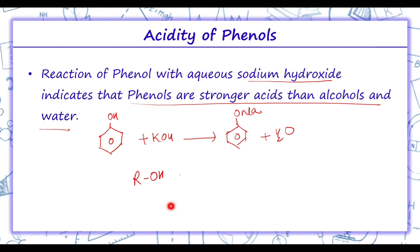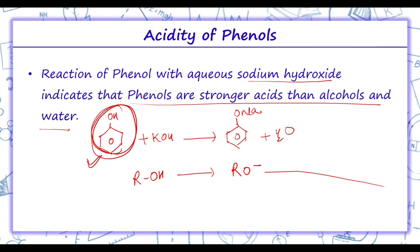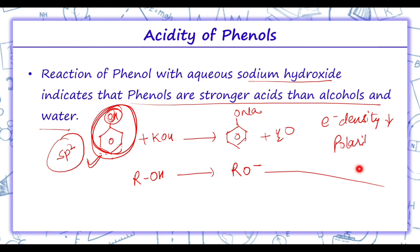In ROH, the alkoxide ion RO⁻ is formed. Due to the higher electronegativity of the sp2 hybridized carbon in the benzene ring to which the O-H group is attached, the electron density on oxygen decreases. Since electron density decreases, the polarity of the O-H bond increases. Since polarity increases, there is an increase in ionization of phenols, and thus phenols are more acidic than alcohols and water.